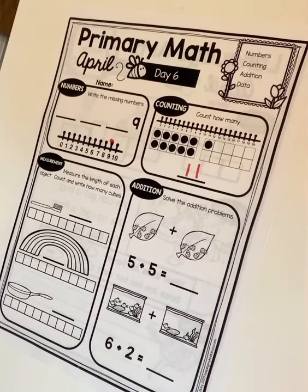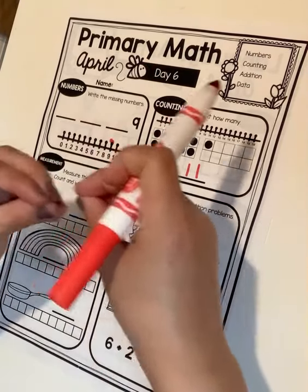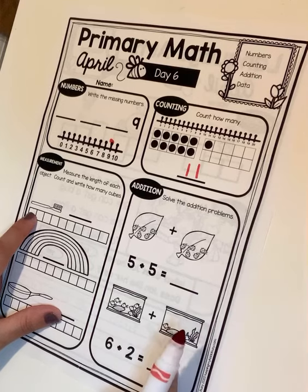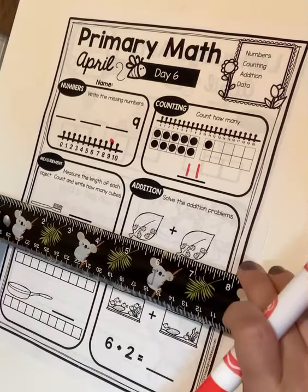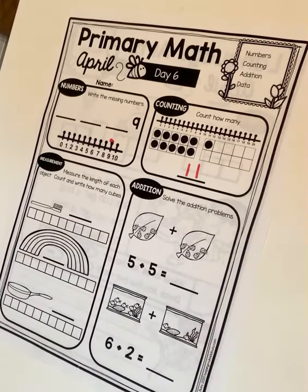So do you remember those little snap cubes that we had in class where we would snap and you guys would make fidget spinners and castles and all sorts of things? Well, I want you to imagine that these squares are snap cubes that snap together. It says measure the length of each object, count and write how many cubes. So if we want to know how long something is, sometimes we use a ruler and sometimes we use cubes.